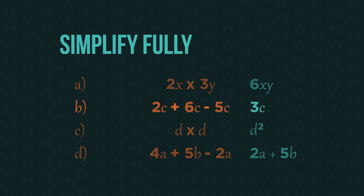In the second one, we group the same letters together, so 2c plus 6c minus 5c gives us 3c.